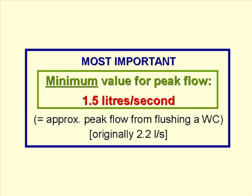A really important concept in simplified sewerage design is that we use a minimum value for the peak flow. The value we use is 1.5 litres per second, which is roughly the peak flow you get in a sewer from flushing a toilet. Originally in Brazil it was 2.2 litres per second, but they found that 1.5 litres per second is a better estimate.